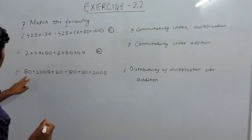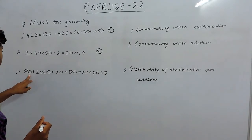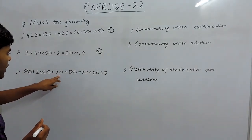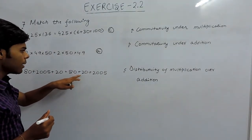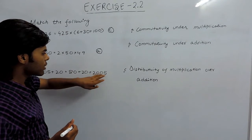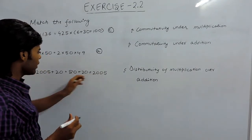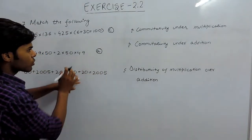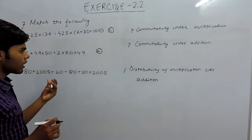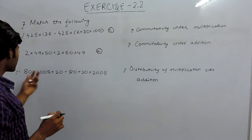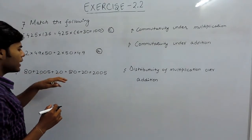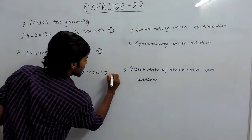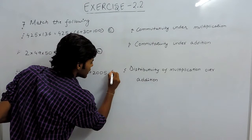In the third part, it is 80 plus 2005 plus 20, which is further written as 80 plus 20 plus 2005. We just interchange the position, so this is commutative, and because it is under addition, it will be commutative under addition. The answer is B.